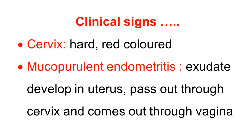Clinicians examining the cervix find that in campylobacteriosis the cervix is very hard, somewhat enlarged, and indurated. A characteristic of the disease is that it develops leukopurulent endometritis. The mucus exudate that develops in the uterus forms a large mass that passes through the cervix and comes out into the vagina. Because of the endometritis, this discharge is visibly cloudy and may contain clots and flakes — another diagnostic finding for campylobacteriosis.